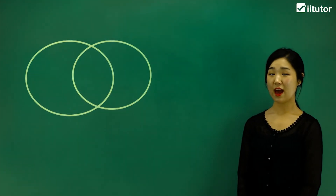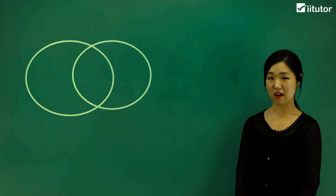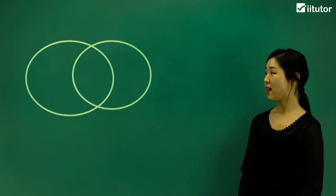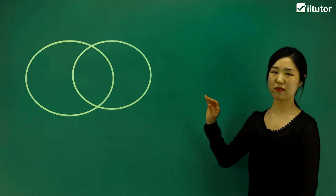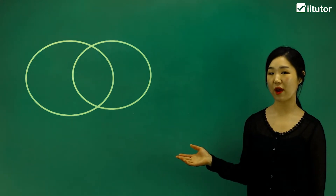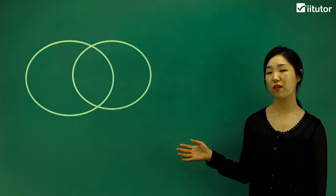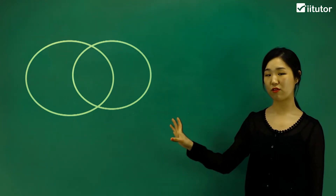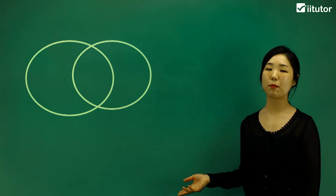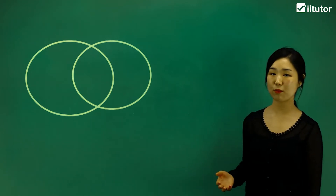We're going to be looking at how to relate Venn diagrams with two-way tables. If you've seen something like this, this is what we call a Venn diagram, and we're going to try to relate the information given in a Venn diagram into a two-way table.